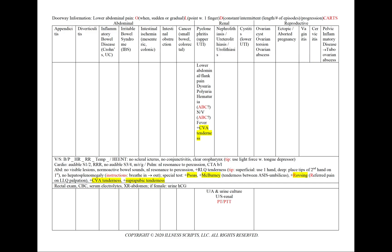In pyelonephritis, which is an upper UTI, we'll see lower abdominal or flank pain. Our patient can have dysuria, polyuria, and hematuria — using A, B, and C to note the amount, blood, and color of the urine — along with nausea, vomiting, and fever. A positive special test for CVA tenderness will be noted. For all renal cases, we'll order a urinalysis and urine culture, an ultrasound of the renal system, and a PT and PTT for any blood in the urine.